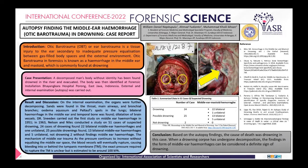As an introduction, otic barotrauma, or ear barotrauma, is a tissue injury to the ear secondary to inadequate pressure equalization between gas-filled body spaces and the external environment. In forensics, otic barotrauma is recognized as hemorrhages in the middle ear and mastoid.